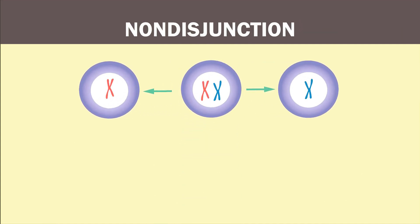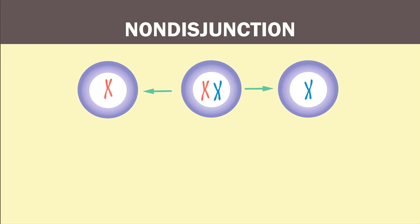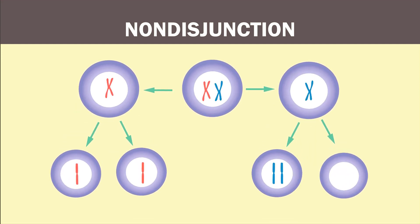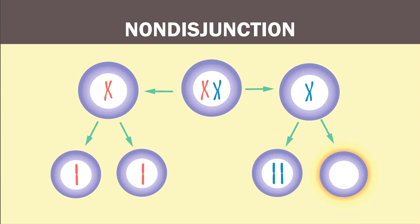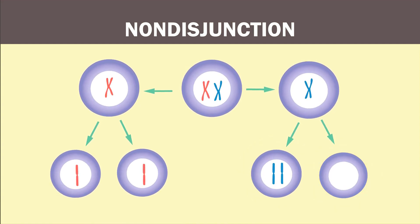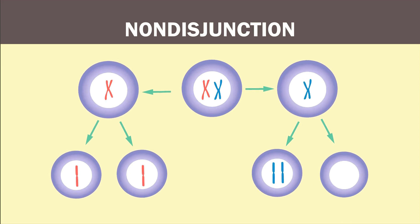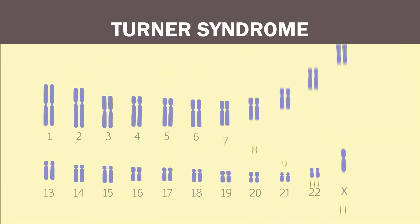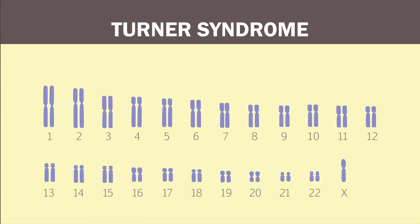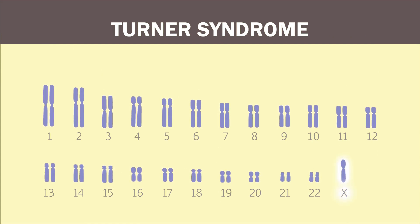Non-disjunction occurs when the spindles that pull apart the chromosomes at the metaphase plate divide the sister chromatids unequally, so that one daughter cell contains both sex chromosomes and one daughter cell contains no sex chromosomes. When the gamete with no sex chromosome joins with another normal gamete, the result is a zygote that only contains 45 chromosomes, one of which is the X sex chromosome. This is denoted as 45X.